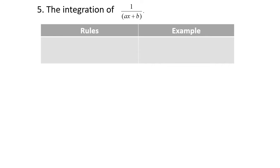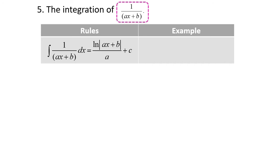Next, the integration of 1 over ax plus b. When we integrate 1 over ax plus b dx, it must be equal to ln|ax plus b| over a. Please remember a, because most students usually forget to write divide by a, and then plus c.